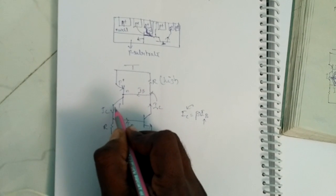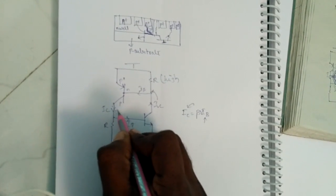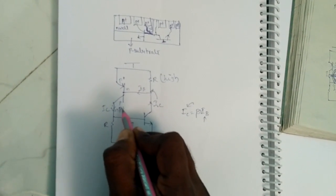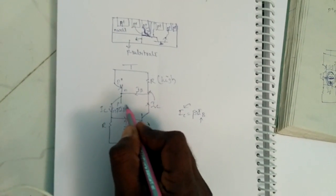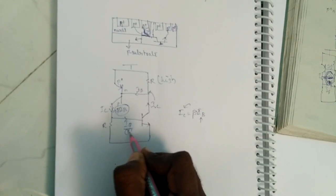In general, if we start with this one, IC is nothing but beta into IB. What is IB? It is IB, which is nothing but beta into IB.